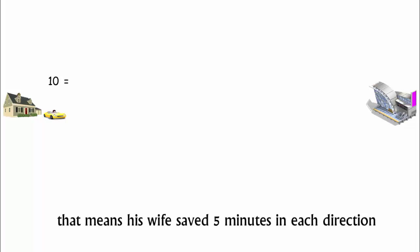If yesterday, they were home 10 minutes earlier than the normal time, that means his wife saved 5 minutes in each direction. That is, she saved 5 minutes while driving towards the station and 5 minutes while driving back home.